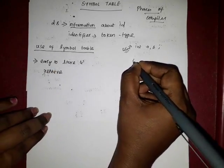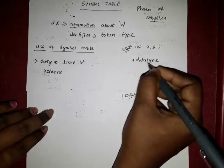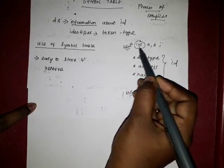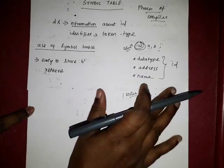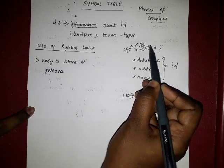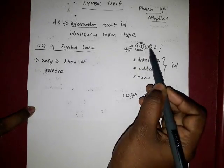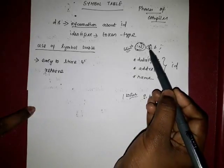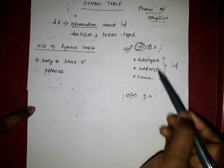The symbol table is a data structure that stores identifier information. What information is stored? It stores the data type of the identifier, the address — meaning the particular memory address — and the name of the identifier. For example, if A is declared as integer, the data type integer is stored, along with the memory address and the name A.